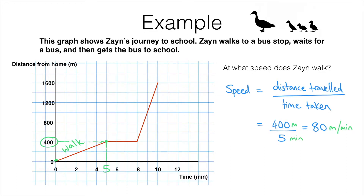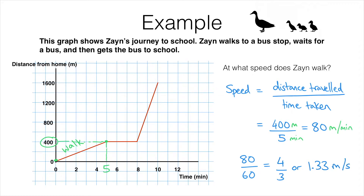Meters per minute is unusual — it's more common to use kilometers per hour or meters per second. Converting 80 meters per minute to meters per second: 80 meters every minute means 80 meters every 60 seconds, so in one second we do 80 divided by 60 meters. That simplifies to 4/3, which rounds to 1.33 meters per second.